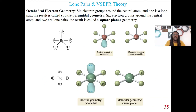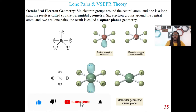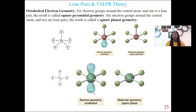Last, we have octahedral electron geometry — this is where we have six electron groups around the central atom. If one of them is a lone pair, then you're going to have square pyramidal geometry. So this structure BrF5 is normally octahedral, but the molecular geometry is square pyramidal. These geometry names sound like what they look like. For six electron groups with two lone pairs, this is going to be square planar. We have octahedral electron geometry, but the molecular geometry is square planar because of those two lone pairs.